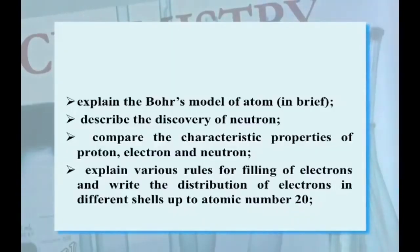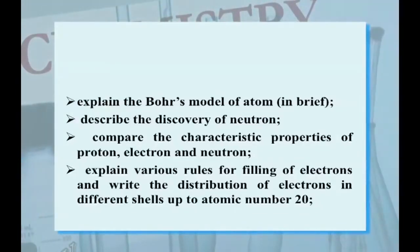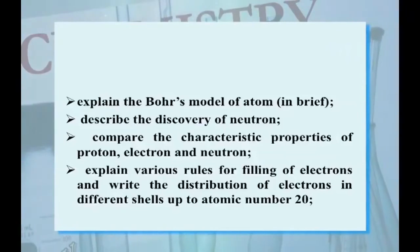You will be able to explain Bohr's model of atom in brief, describe the discovery of neutron, compare the characteristic properties of proton, electrons and neutrons, explain various rules for filling of electrons and write the distribution of electrons in different shells up to atomic number 20, define valency and correlate electronic configuration of an atom with its valency.